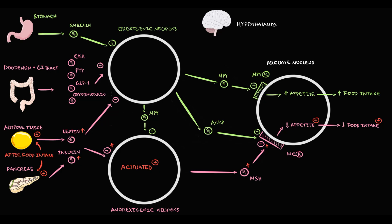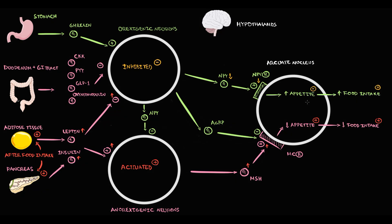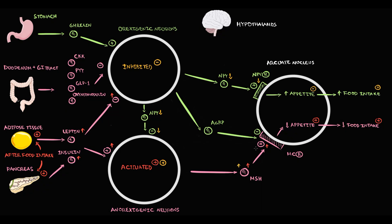Also, leptin and insulin inhibit orexigenic neurons. With this inhibition, orexigenic neurons decrease the production of neuropeptide Y, which results in less potent stimulation of the NPY receptor. As a result, appetite stimulation decreases, which results in suppression of food intake. Additionally, decreasing neuropeptide Y secretion causes disinhibition of anorexigenic neurons, so their activity increases. Increasing activity of anorexigenic neurons causes increasing production of melanocyte-stimulating hormone, leading to more potent stimulation of the MC receptor, which potentiates appetite suppression and leads to decreased food intake.